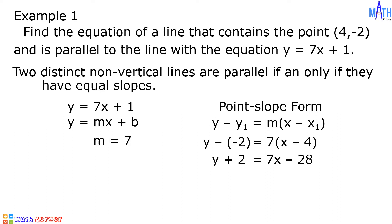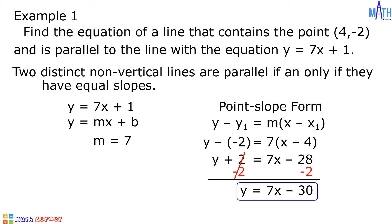Let us add -2 on both sides of the equation. Since 2 + (-2) = 0, then we have y on the left side. On the right side, since -28 + (-2) = -30, then we have 7x - 30. And this is the equation of the line that contains the point (4, -2) and is parallel to the line y = 7x + 1.